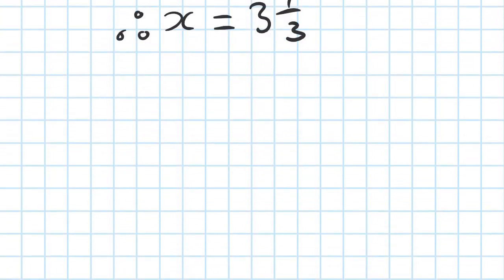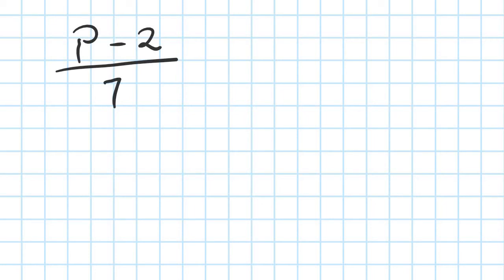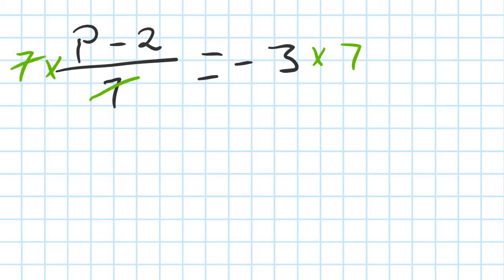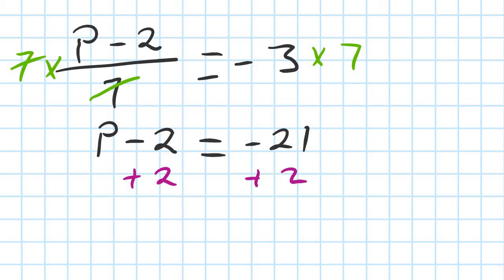Next: p minus 2, all over 7, is equal to negative 3. Step one, multiply both sides by 7 to get rid of the denominator. On the left you're left with p minus 2. Negative 3 times 7 is negative 21 — use your calculator. Then to get rid of the minus 2, add 2 to both sides. So p equals negative 21 plus 2, which is negative 19.